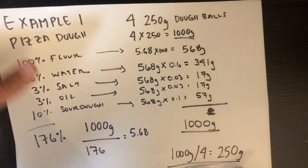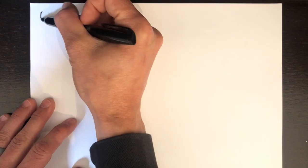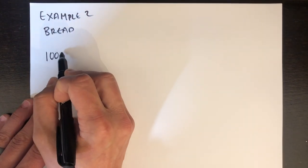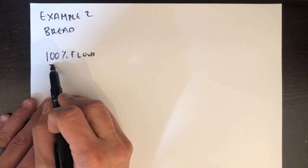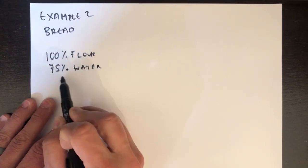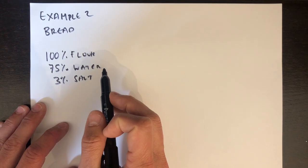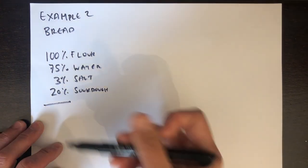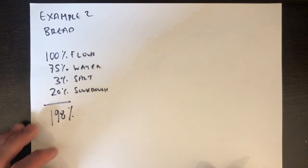This works for any weight, any type of dough you're using and any percentages. I'm going to show you that with example two, which is with bread dough. So I'm just going to write down a bread dough recipe here: 100% flour. Every recipe with percentages will always have 100% flour. Even if you're mixing flours, they'll always add up to 100%. 75% water, 3% salt and 20% sourdough.